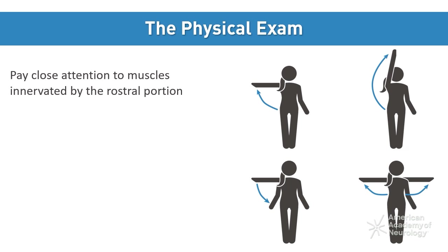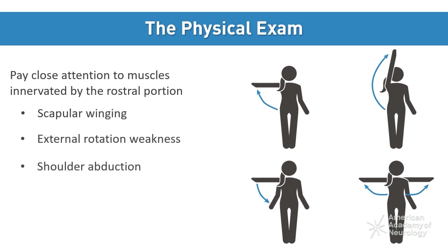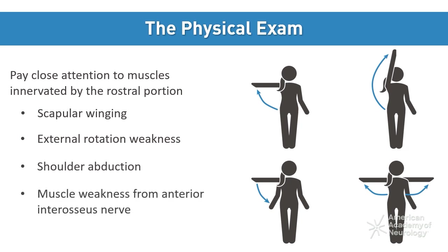Check for things such as scapular winging, weakness in external rotation and abduction of the shoulder, and weakness in muscles supplied by the anterior interosseous nerve. We can then use the exam findings to localize the site of injury.